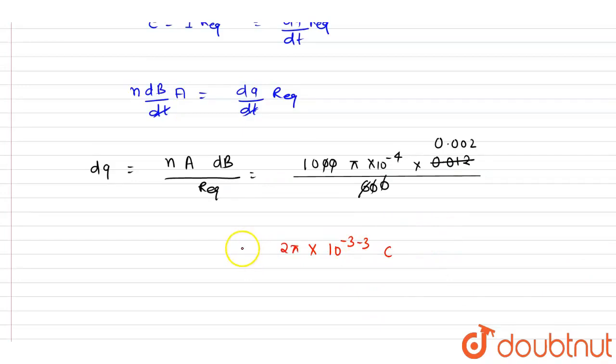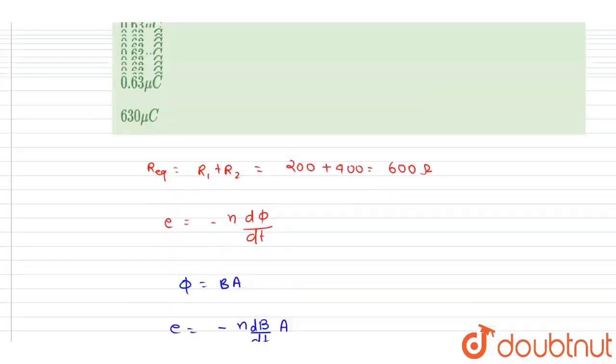That is 6.28 into 10 to the power minus 6 coulomb, and you can also write it as 6.28 micro coulomb. And this is the answer of this question. Now you can check for the option here.